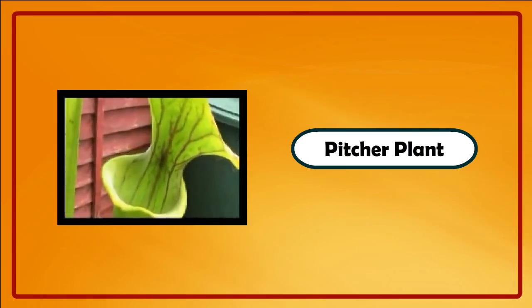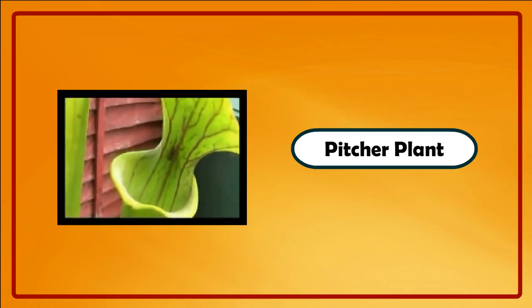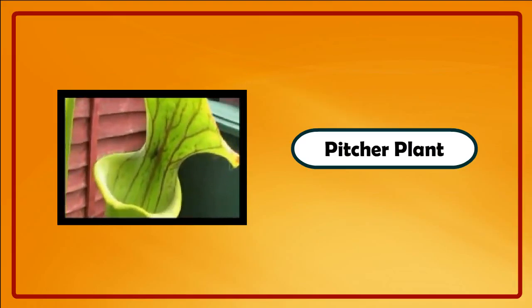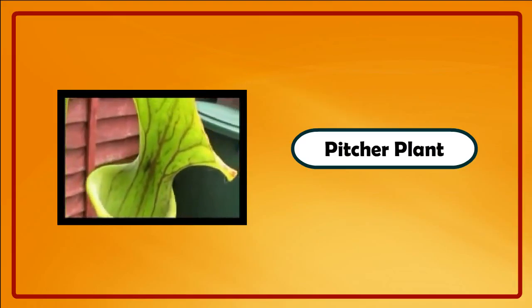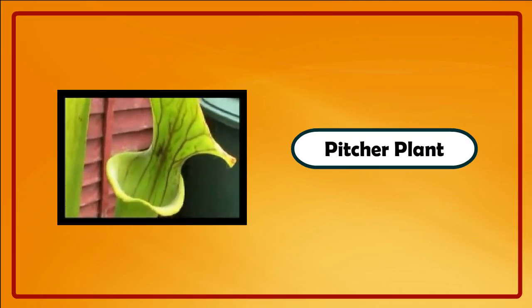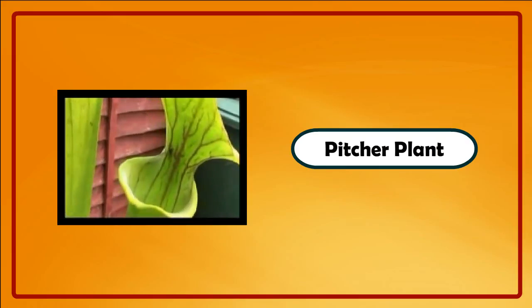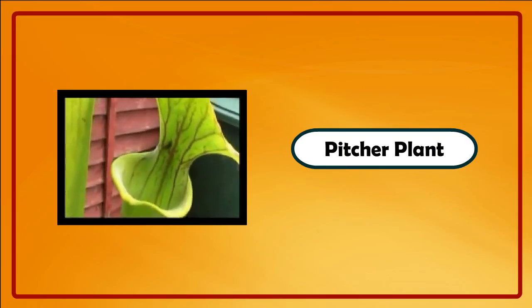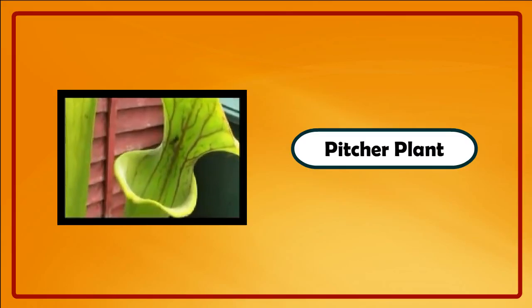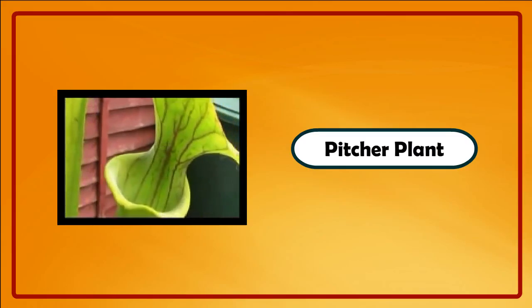The leaves of a pitcher plant are in the form of a pitcher or vase. Sweet-smelling nectar is present inside the pitcher that attracts insects. The inside of the leaf is slippery and is covered with downward-pointing hair. The insect that sits on the leaf slides down and drowns in the nectar.